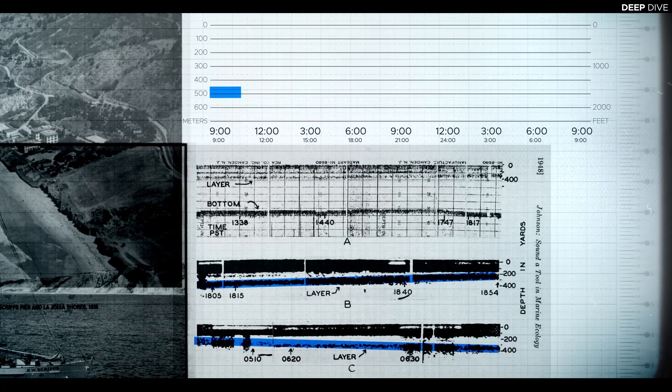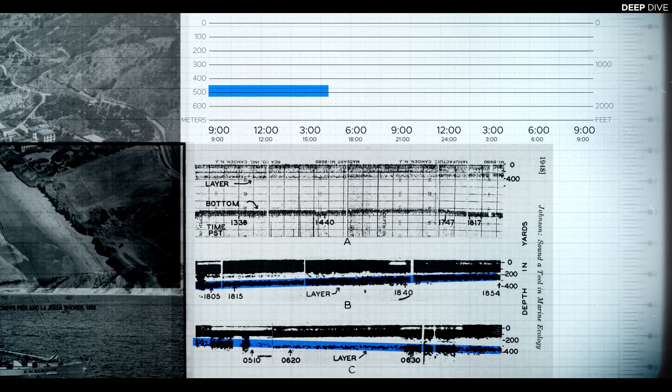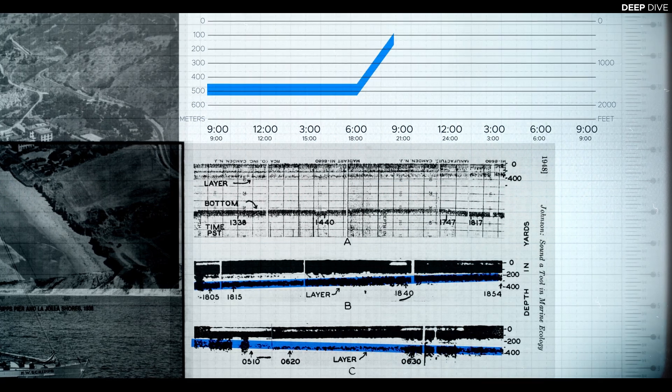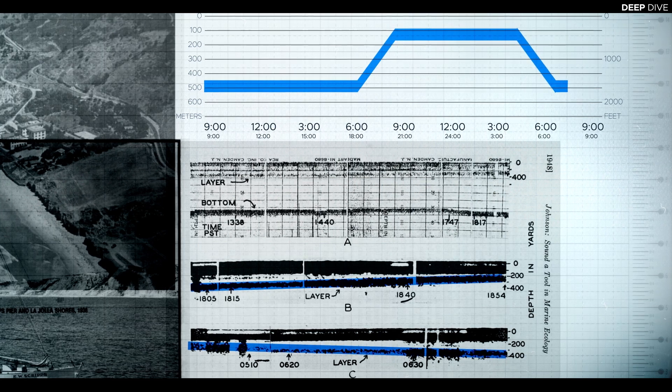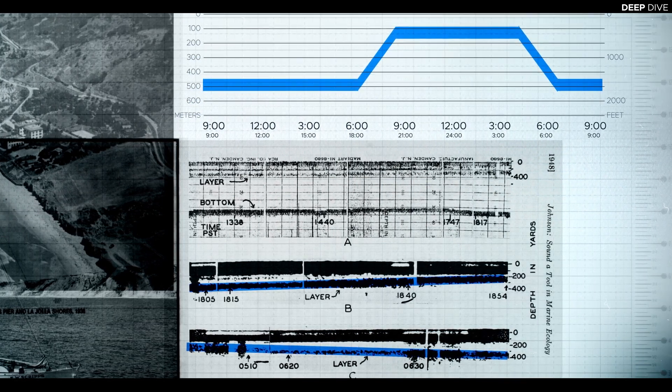During the daytime, the deep scattering layer was typically observed at depths of between 400 and 600 meters. At dusk, however, it started to rise to the surface, where it stayed during the night before descending back to deeper waters at dawn.